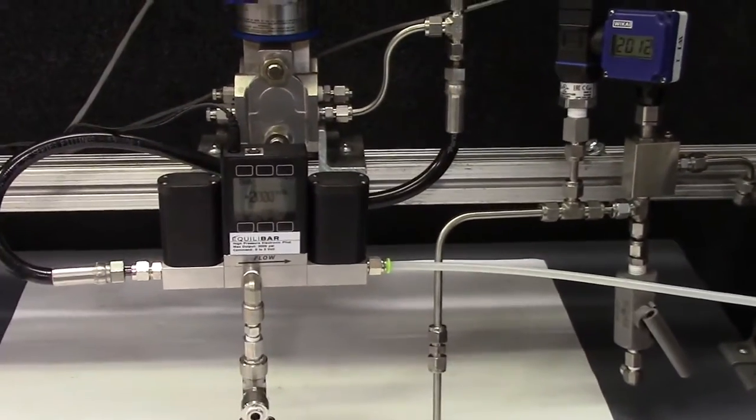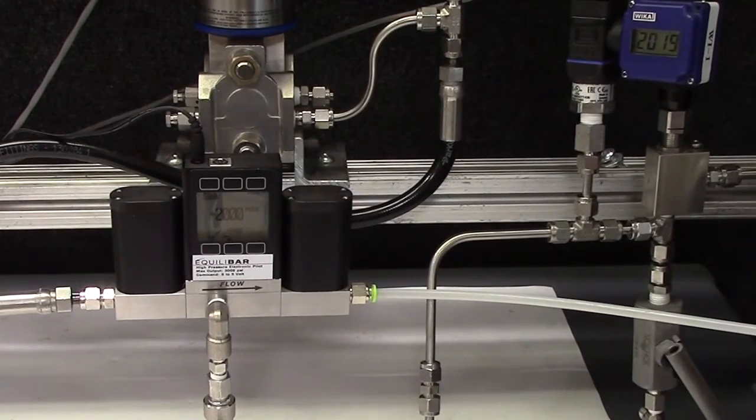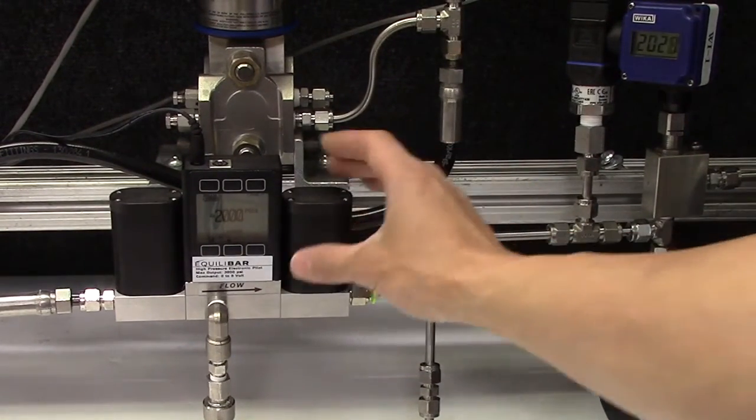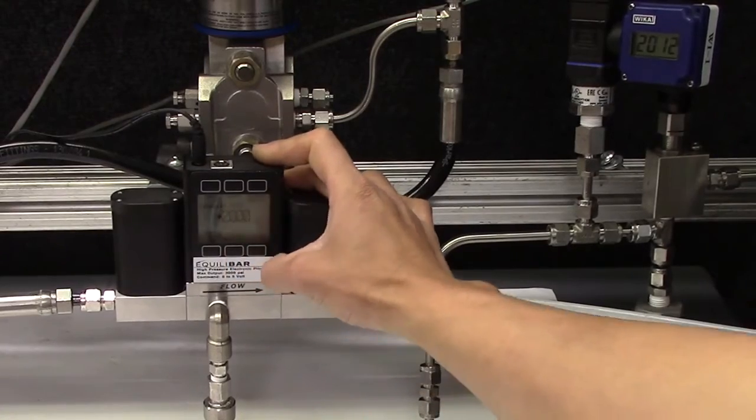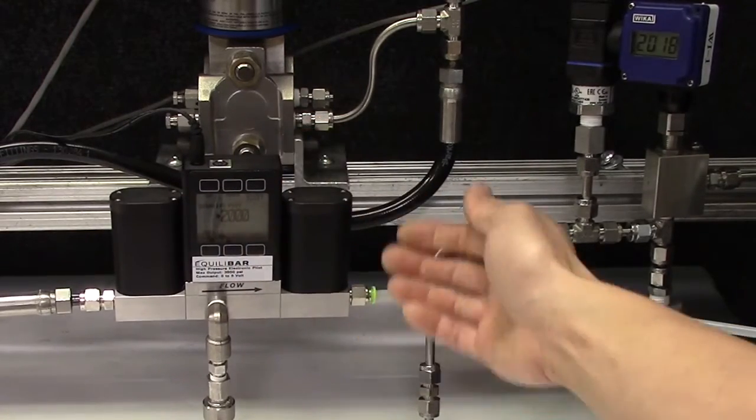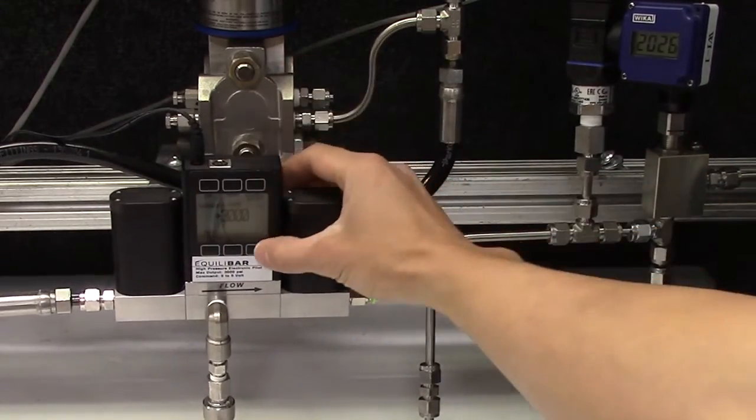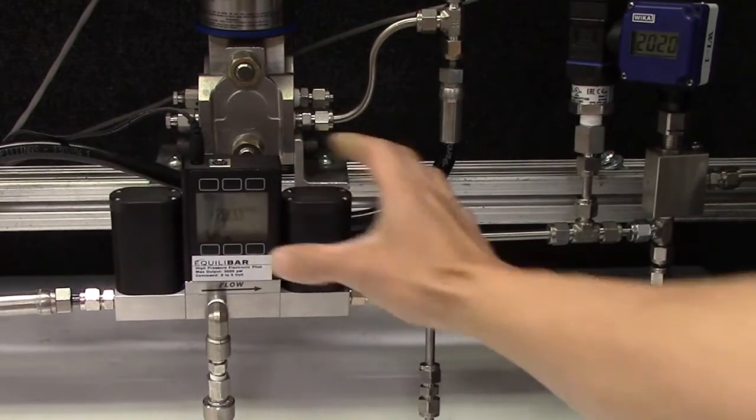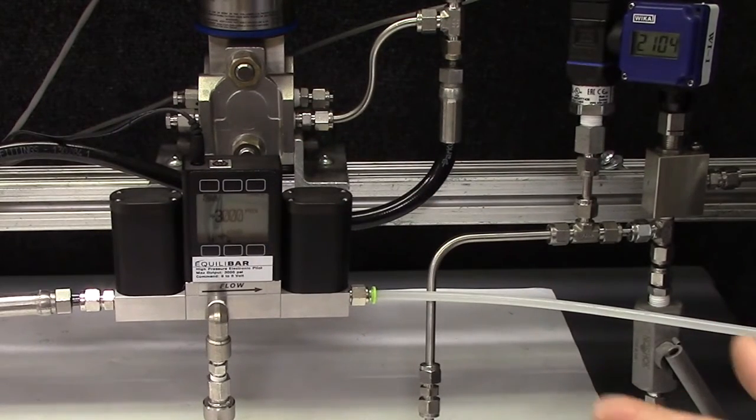So first, we will demonstrate changing the pilot pressure. We'll take an increase in pilot pressure. I'll adjust this valve, currently it's at 2000. We'll go up to 3000. I'll hit set, and you see the pilot pressure increase to 3000.